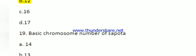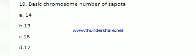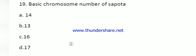Question number 19: basic chromosome number of sapota. The options are 14, 13, 16, and 17. The chromosome number of sapota is 2n = 2x = 26, meaning it is diploid in nature. Therefore the basic chromosome number is 13.